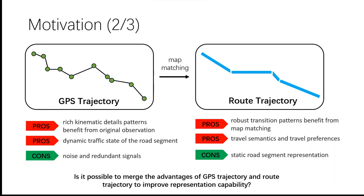Is it possible to merge the advantages of GPS trajectory and route trajectory to improve representation capability?